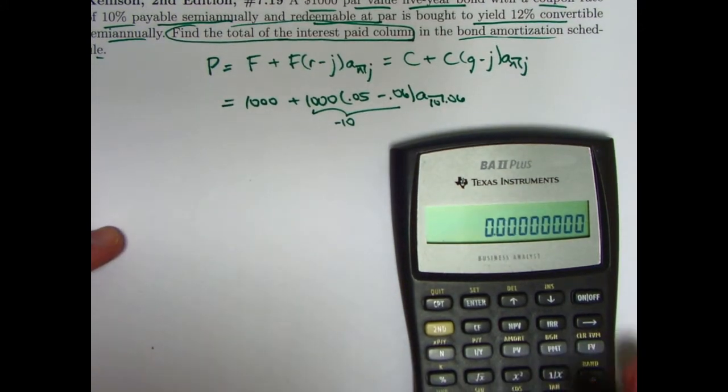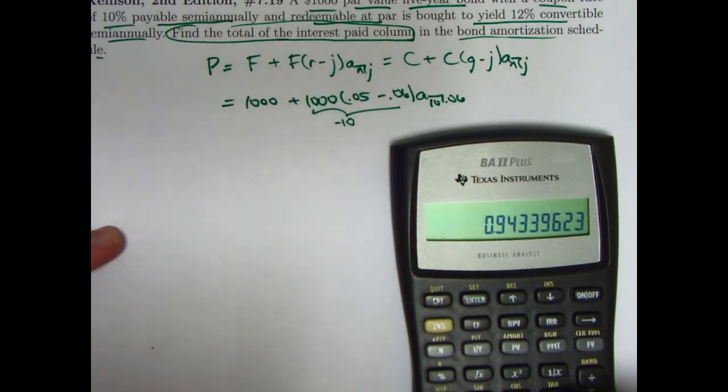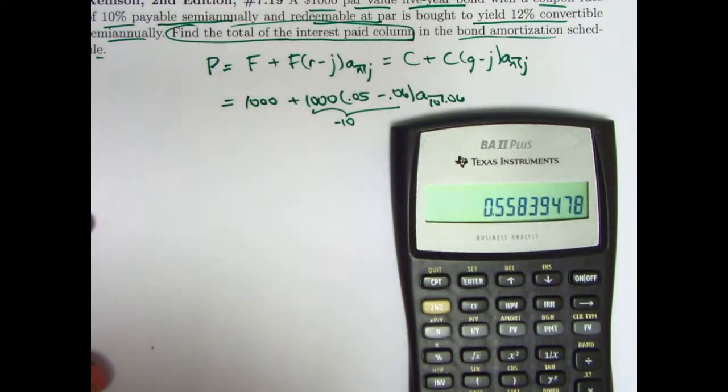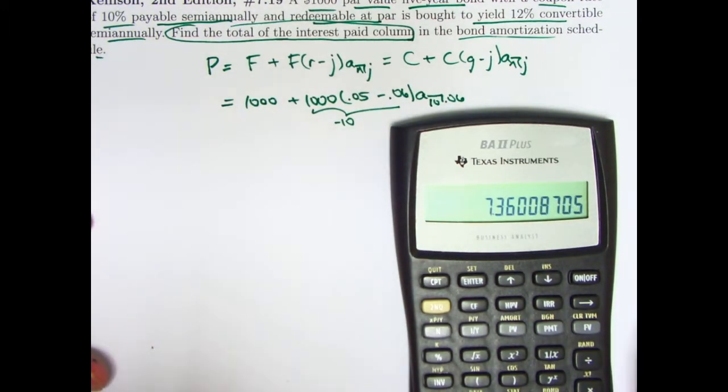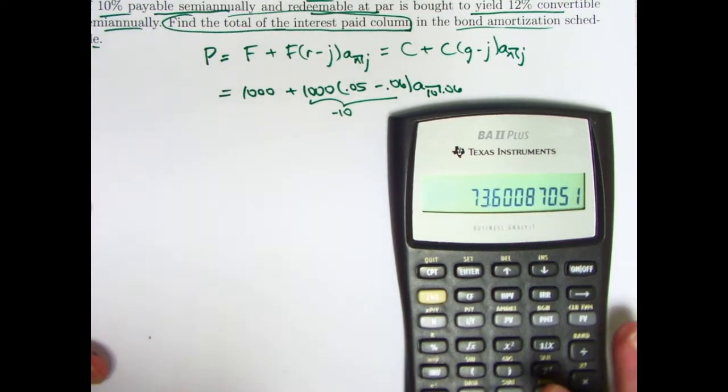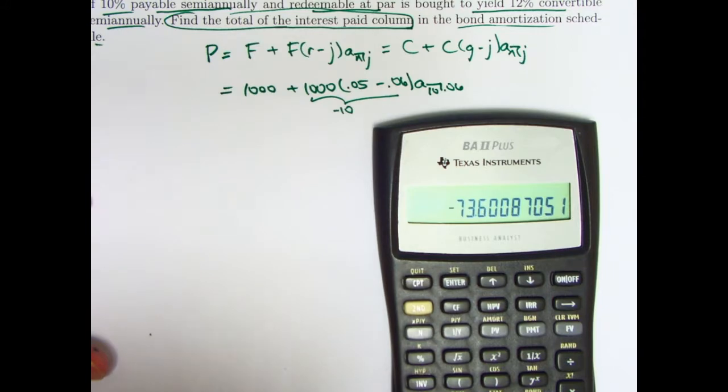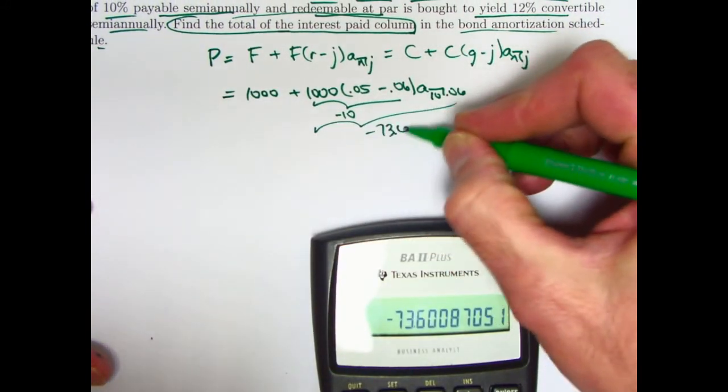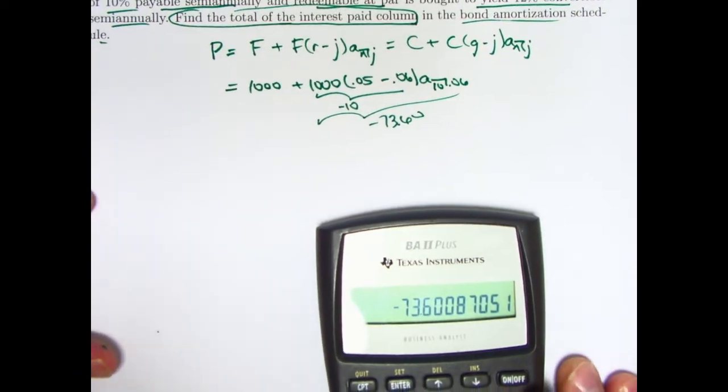All right, that is the quick way you want to be able to solve this quickly based on understanding the principle. Take the 1.06, that's 1 plus j, take its reciprocal to get a v, raise it to the 10th power. I'm figuring out a_10 here, subtract from 1, divide by .06, a_10 is about 7.36, times negative 10 is negative 7360. That's what this thing here is, negative 7360. Positive 7360 would be the amount of the discount then.